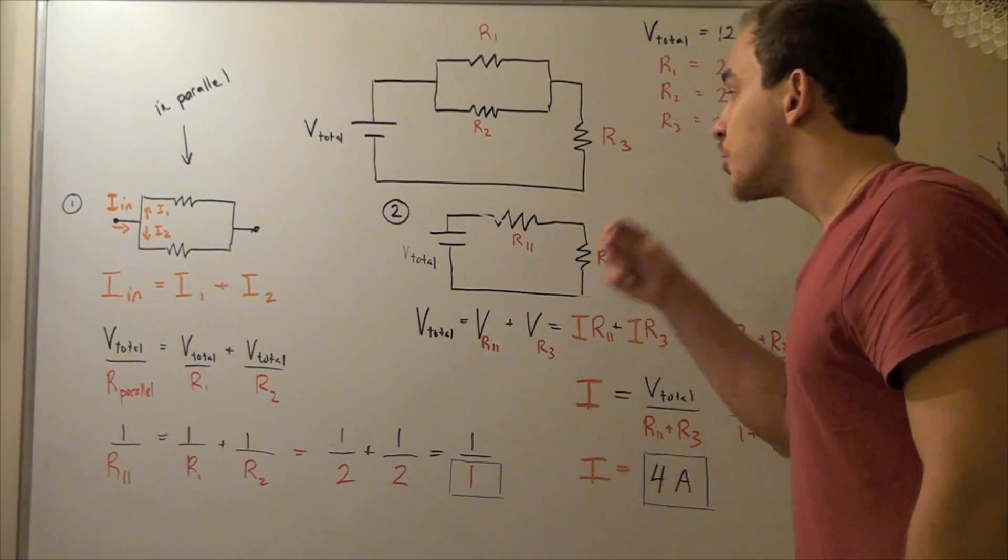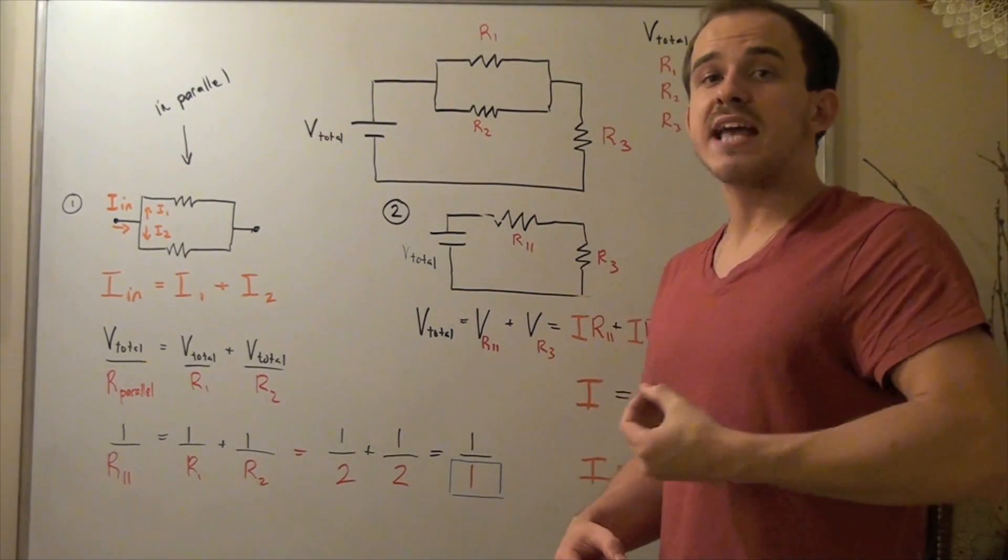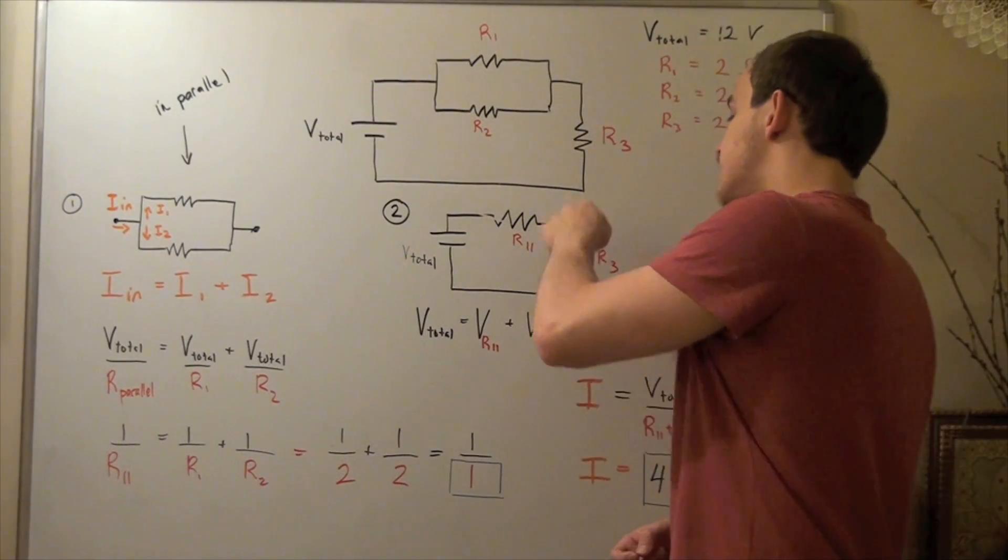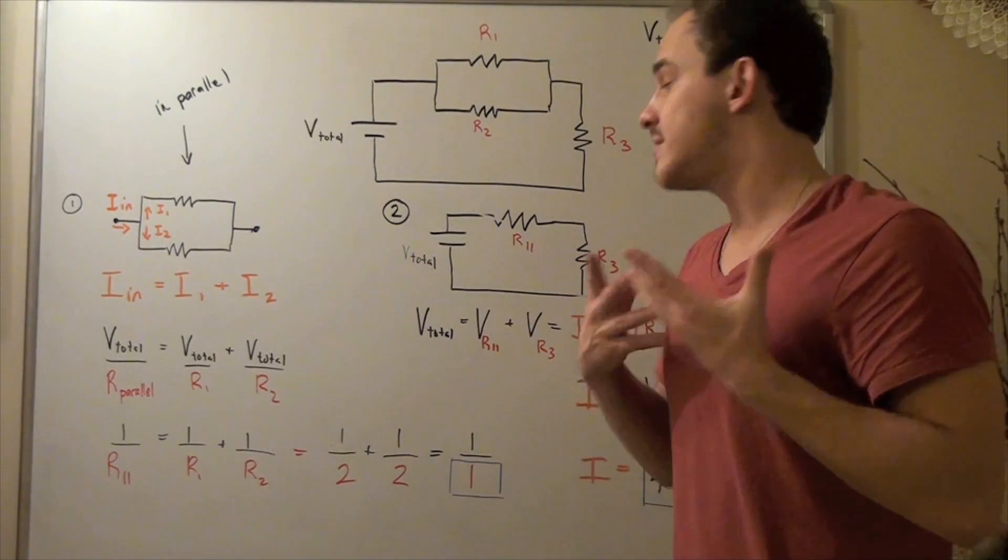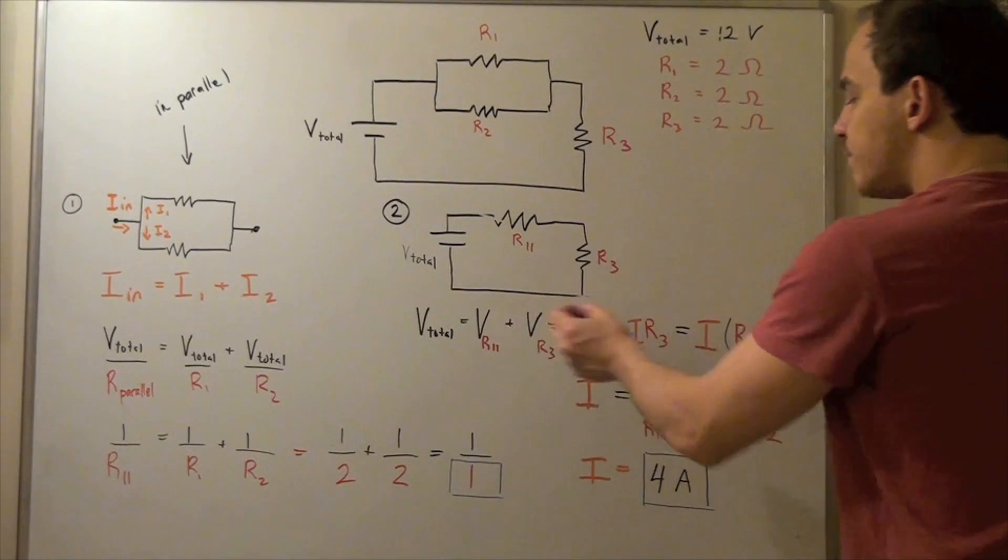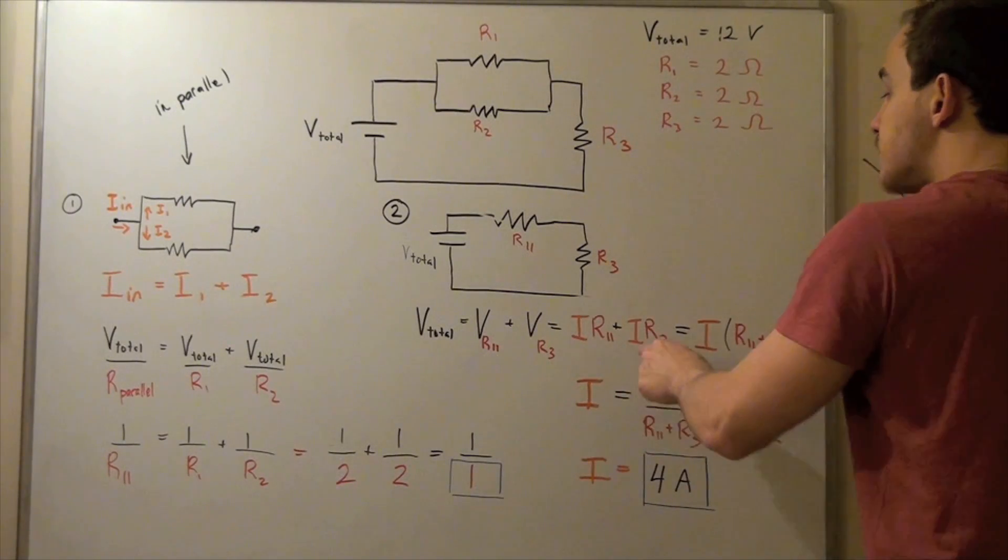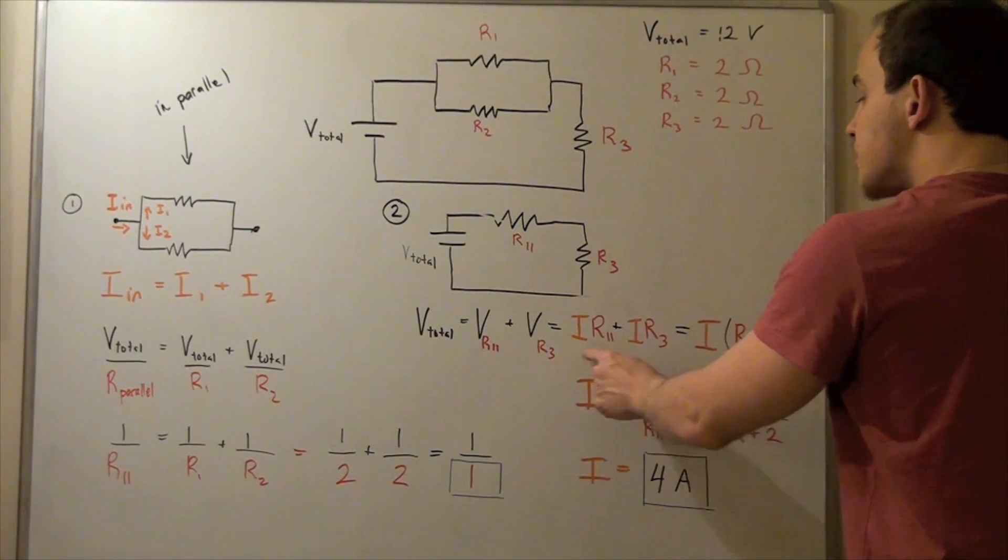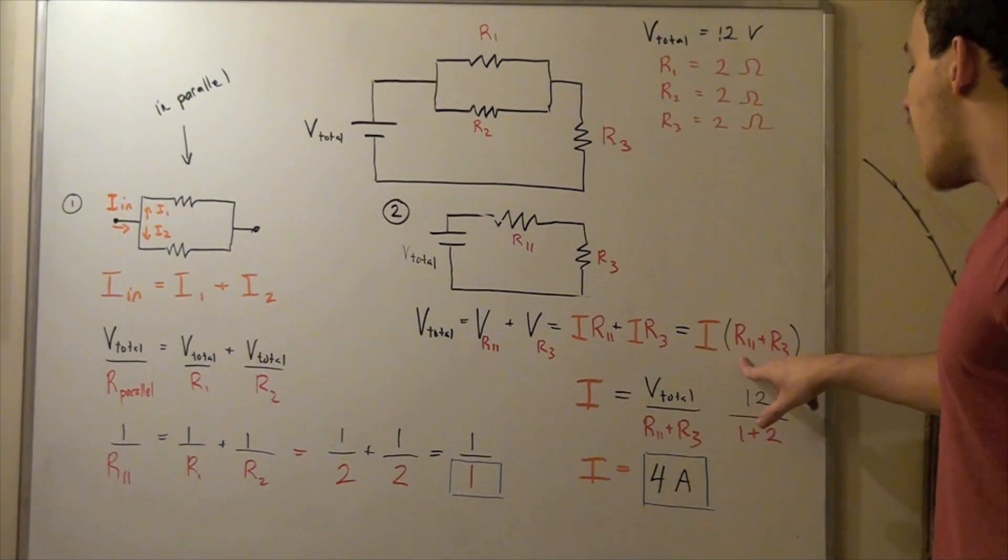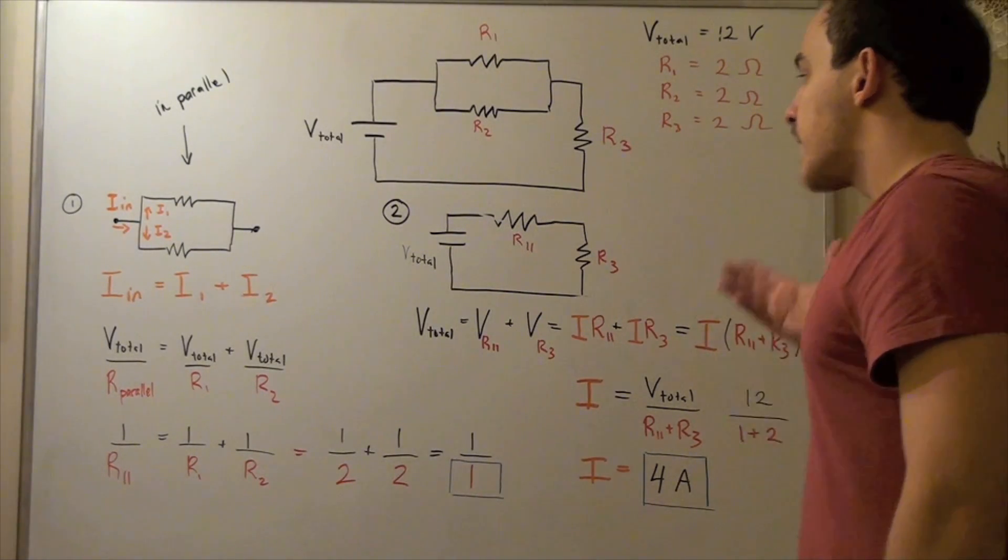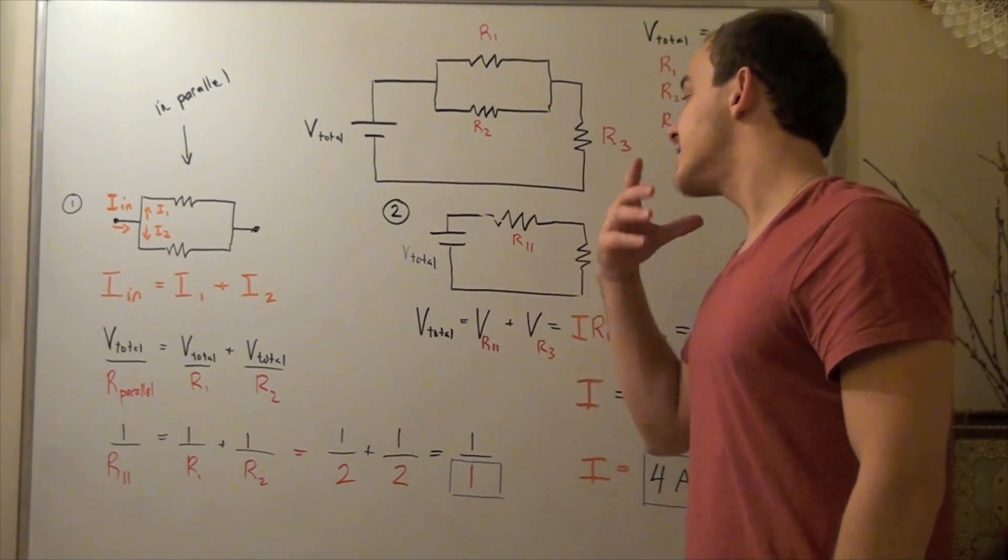We find that our current that enters this is the same as the current that leaves. The current across this guy and this guy is exactly the same. That's why we rewrite these in the following manner: I times R parallel plus I times R3. The current stays the same, so it's a common term. We take the I out and get I times R parallel plus R3. If we have two resistors in series, we sum their resistance to find the total resistance.